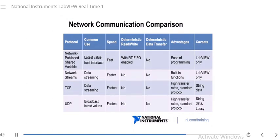Network Streams are used for data streaming — buffered transfer between your RT target and host. Speeds are faster because we're streaming data over the network. There is some overhead, but that overhead is what maintains the connection for you. It's easy to program with built-in network stream functions that take care of connections, as we saw with the writer endpoint and reader endpoint establishing a connection. These functions are not deterministic so don't place them in deterministic loops, and the data transfer itself is not deterministic. The caveat here is also that it is LabVIEW only.